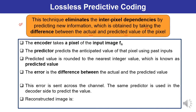The encoder takes a pixel of the input image, that is f(n). The predictor then predicts the anticipated value of that pixel using past inputs — meaning historical data. The predicted value is rounded off to the nearest integer value, which is known as the predicted value and is denoted as f̂(n).